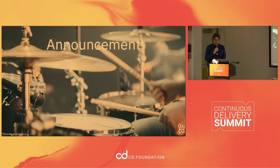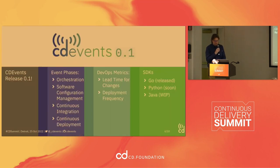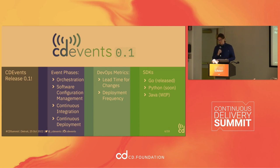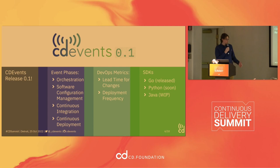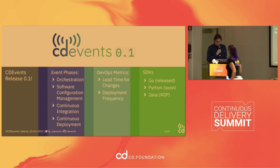So where are we at with CD Events — and this is the third announcement from today. We announced the first release of CD Events. In this release we have events that cover four different stages: orchestration, software configuration management, CI, and CD. We provide enough data to produce metrics like lead time for changes and deployment frequency. We also released the Go SDK, we are going to release the Python SDK soon, and the Java SDK is a work in progress.